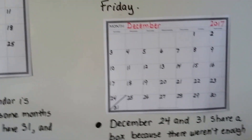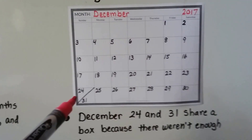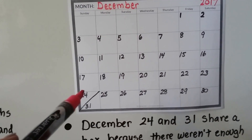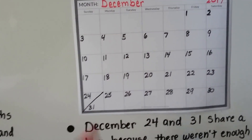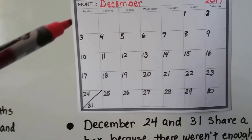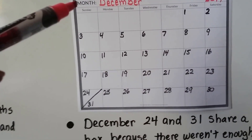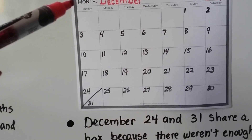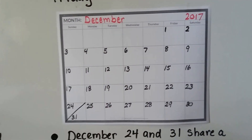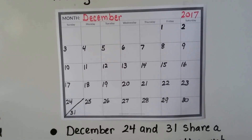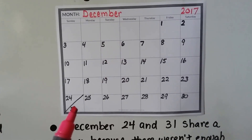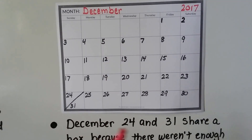Now, if you look at December's calendar, you'll see the slanted line, and there's a 24 and a 31 here. For all of these monthly calendars to be the same size, they have the same amount of boxes. And because December has 31 days, it ran out of boxes.